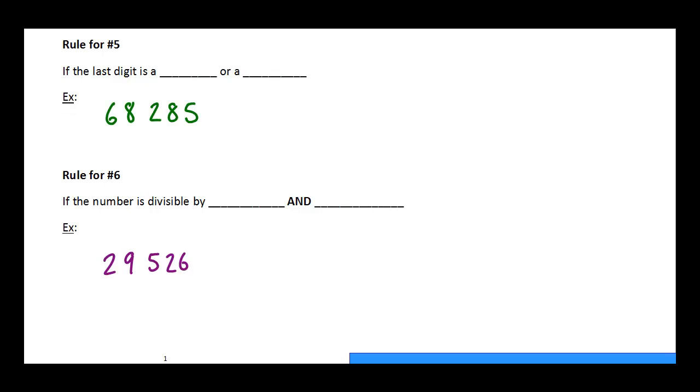Number 5 is a pretty straightforward one. All we have to do is look at the very last digit, and the last digit must be either a 5 or a 0. And if it is, then it is divisible by 5. So 68,285, the last digit is a 5. So yes, that is divisible by 5.